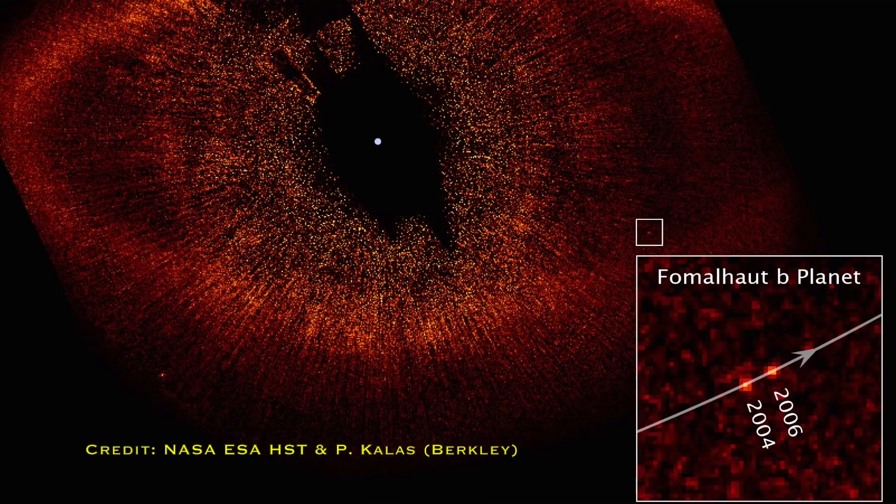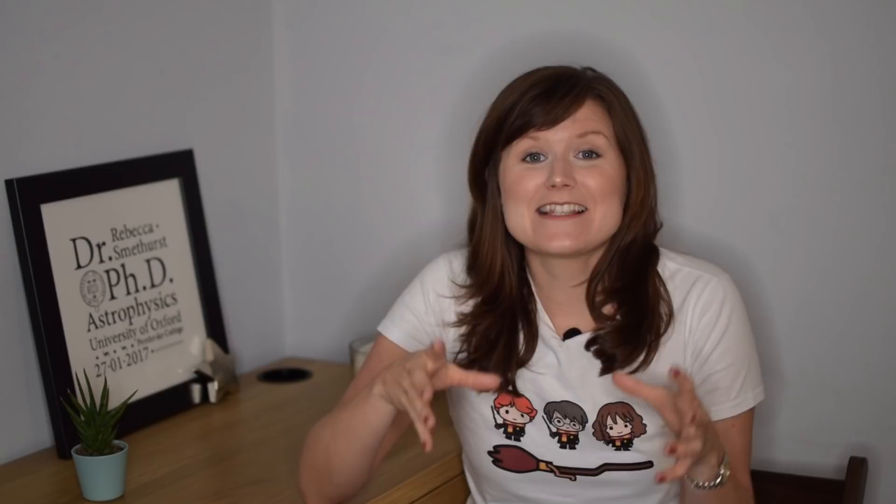In 2009, despite all of these detections of exoplanets, we finally had the first image, a direct image of an exoplanet around another star. This was a group effort led by Paul Kalas and it was of the planet Fomalhaut b, a planet 119 times further out than the Earth is from the sun that is three times the mass of Jupiter.